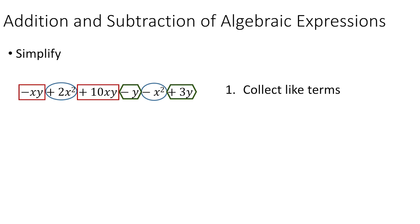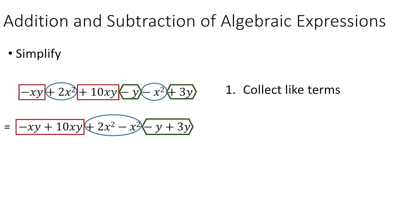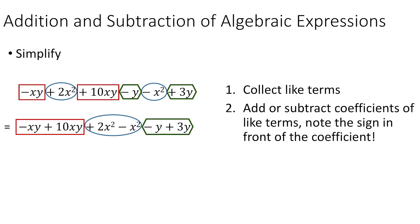Now you can simplify right away, but it helps to rewrite it in a different order, putting all like terms together. So we have minus xy plus 10xy, then plus 2x squared minus x squared, then minus y plus 3y. Writing things out this way keeps you from making a silly mistake. Now the coefficients become important. For xy: minus 1 plus 10 gives positive 9. For x squared: plus 2 minus 1 gives plus 1. And minus y plus 3y gives positive 2.